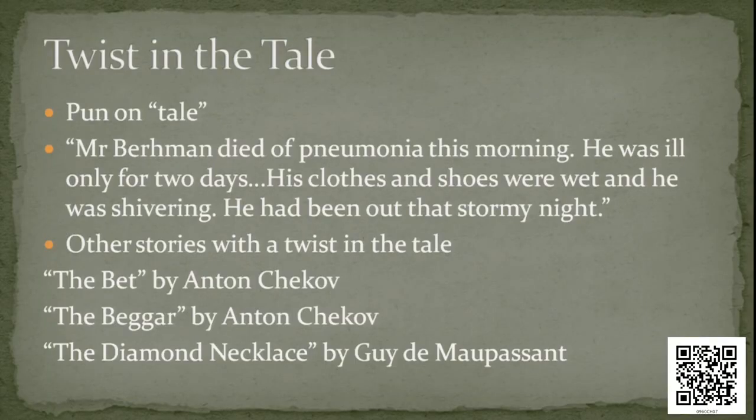As we anticipated, it's Berman who painted the leaf. The actual leaf fell, and that is how she survives. This is called a twist in the tale — though this is not a complete surprise since Berman's character was set up as wanting to paint a masterpiece. The classic short story has a twist in the tale, which is also a pun: 'tale' as T-A-L-E and 'tail' as T-A-I-L. The best writers of the late 19th and early 20th century used the idea of the twist in the tale.